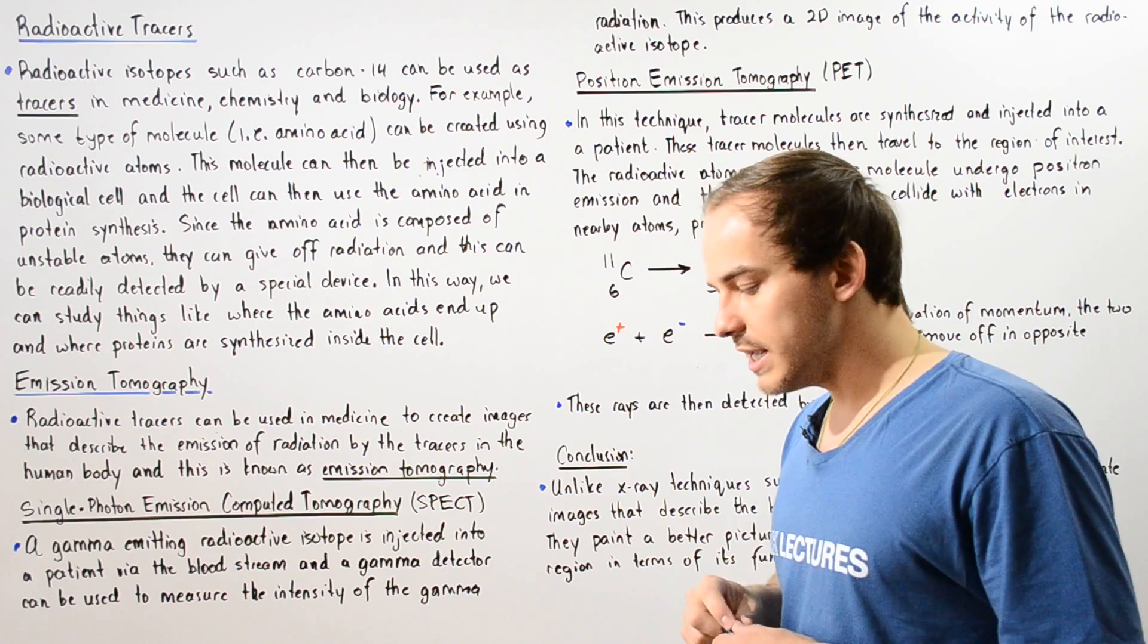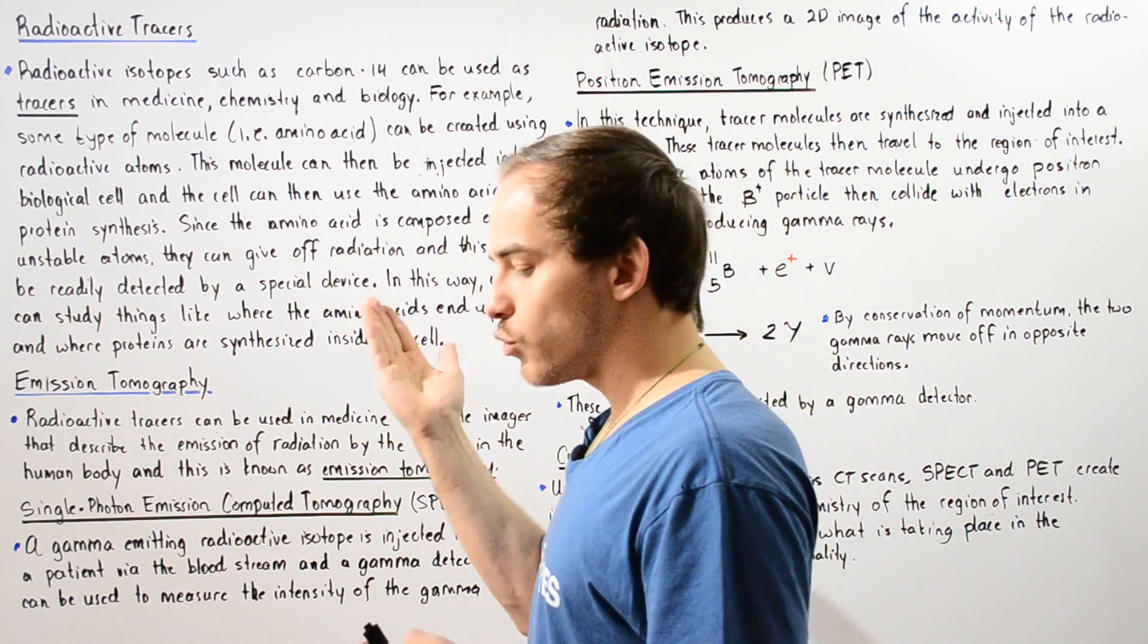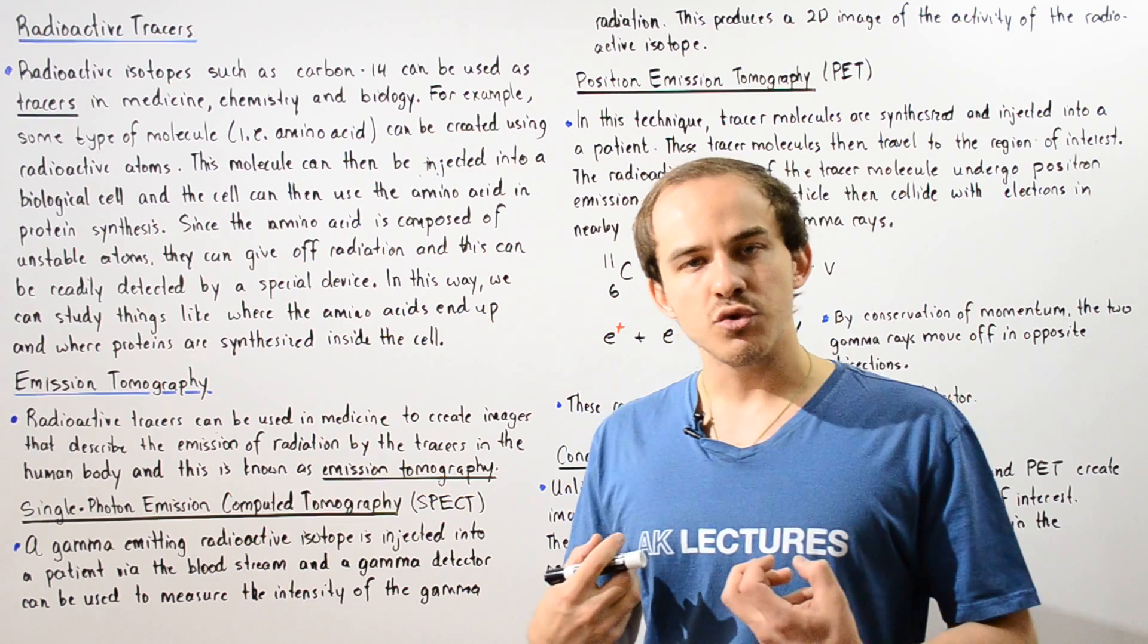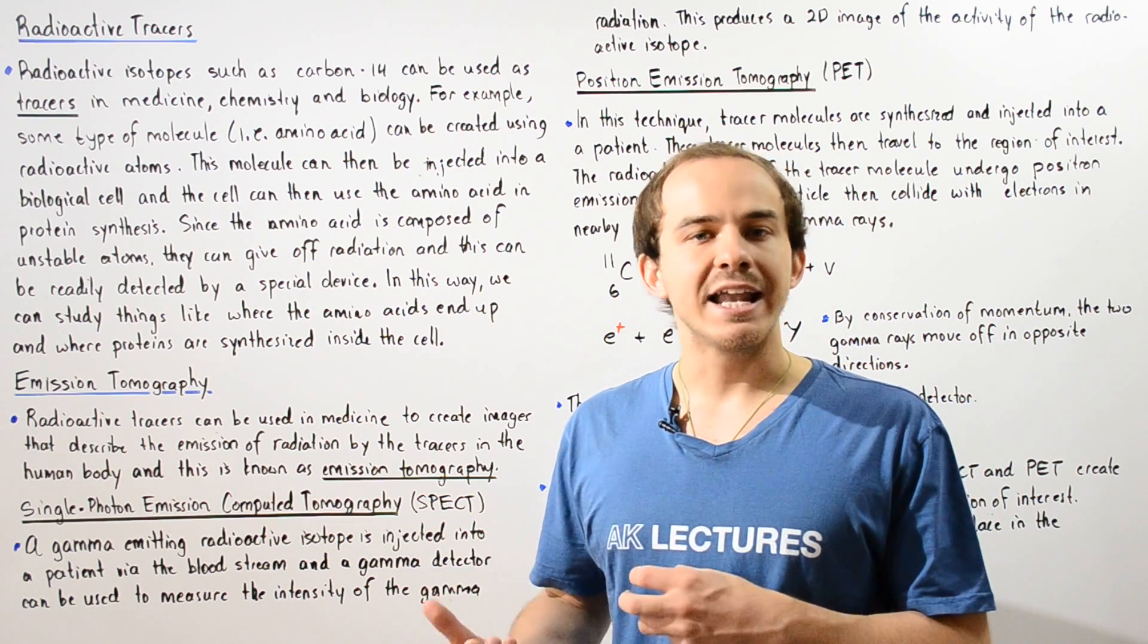Emission tomography is basically the idea of injecting radioactive tracers into the human body to study the way that our body functions, the way that certain processes and organs function.